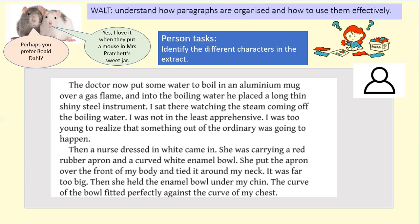What I want you to do is work out how many characters there are in this extract. The doctor put some water to boil in an aluminium mug over a gas flame, and into the boiling water he placed a long thin shiny steel instrument. I sat there watching the steam — not in the least apprehensive, too young to realize something out of the ordinary was going to happen. Then a nurse dressed in white came in. She was carrying a red rubber apron and a curved white enamel bowl. She put the apron over the front of my body and tied it around my neck — it was far too big. Then she held the enamel bowl under my chin; the curve of the bowl fitted perfectly against the curve of my chest.